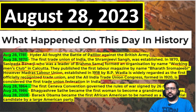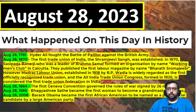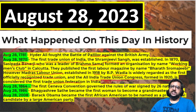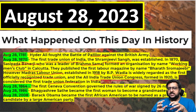The All India Trade Union Congress (AITUC), formed in 1920, was the first trade union federation, and it still exists today. Moving on, the first Geneva Convention, which governs the rules of war — covering war victims and war crises — was signed by 26 nations on August 28, 1864.